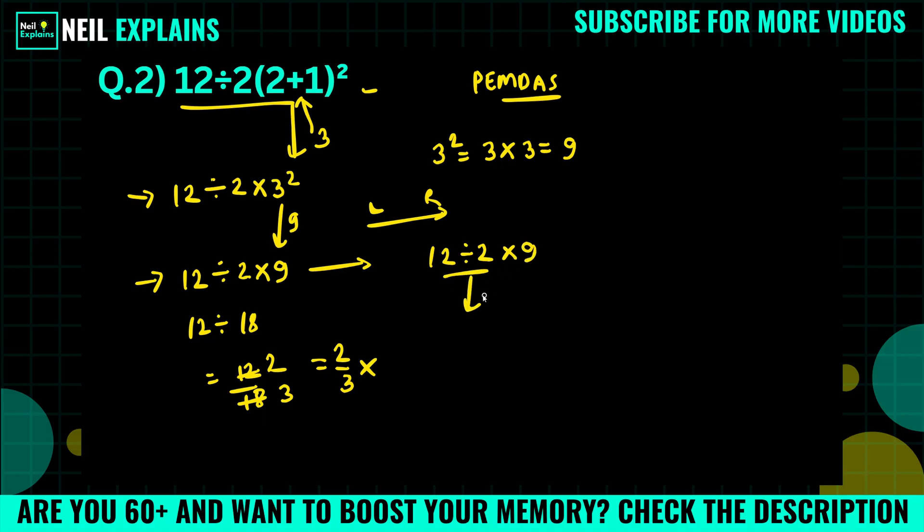So our final equation will become like this: 6 times 9, and 6 times 9, that is 54. So here 54 is the right answer. Watch these videos and thanks for watching.